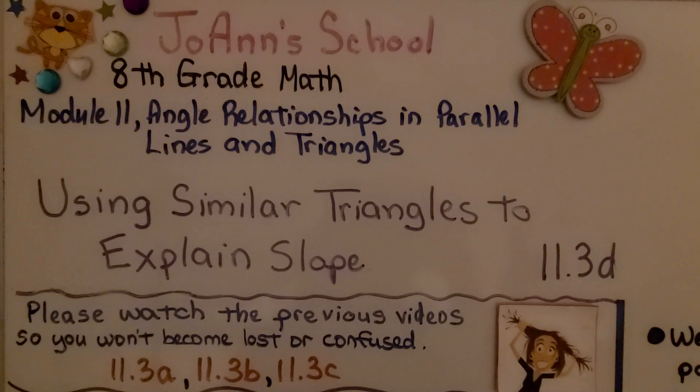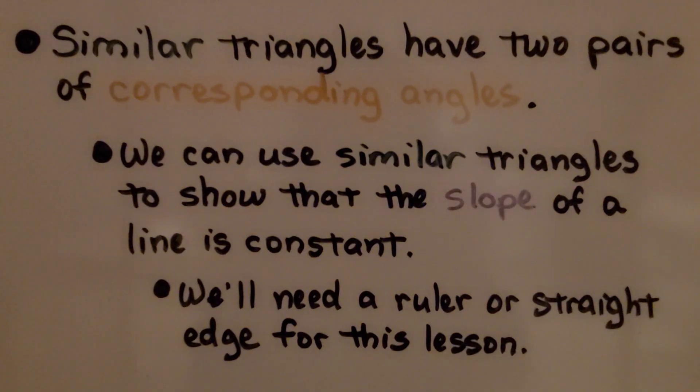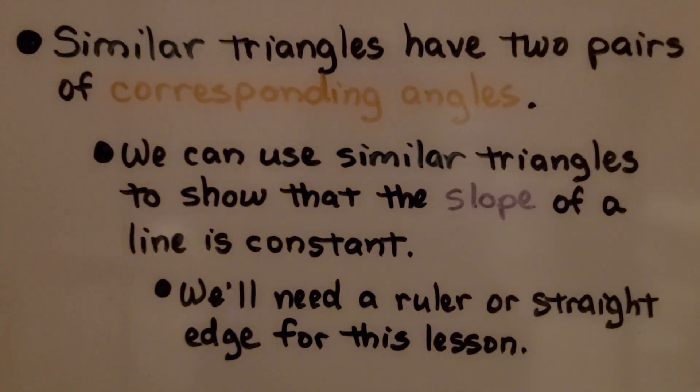Using Similar Triangles to Explain Slope, Lesson 11.3D. Similar triangles have two pairs of corresponding angles. We can use similar triangles to show that the slope of a line is constant. We'll need a ruler or straight edge for this lesson.